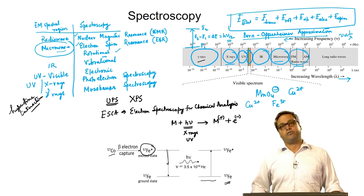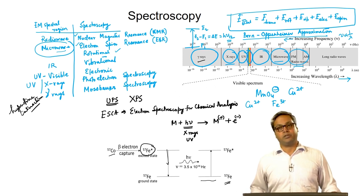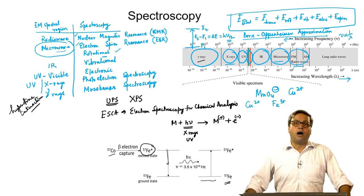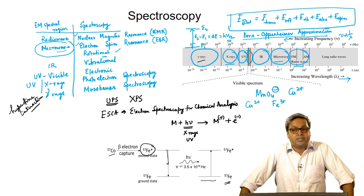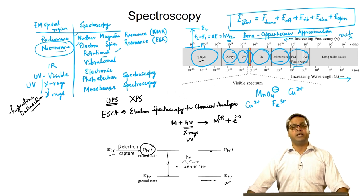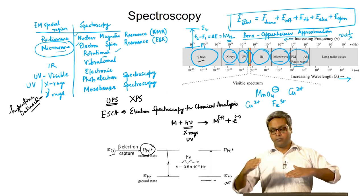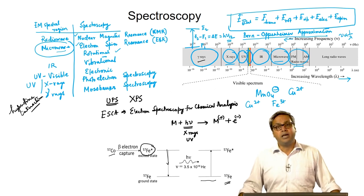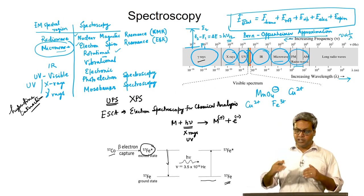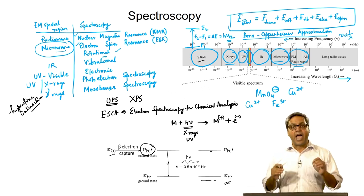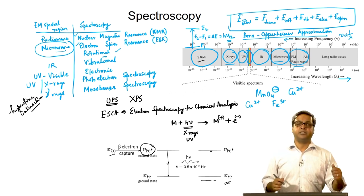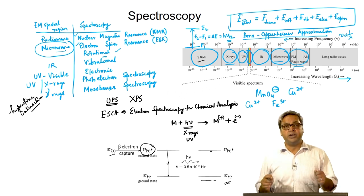Another type is Raman spectroscopy, which differs from the other spectroscopies discussed. In other spectroscopies, a transition takes place from the initial stationary state to the final stationary state directly. But in Raman spectroscopy, a direct transition between the initial and final stationary states does not happen; instead, transition takes place via an intermediate virtual state.